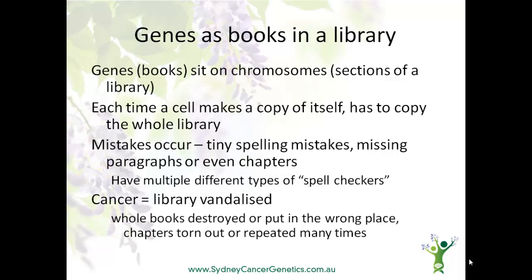And this is what cancer is — it's a vandalised library. Fortunately, we have multiple different spell-checkers and proof-readers whose job it is to look for and fix these mistakes. In some families, a spell-checker isn't working because of an inherited fault or mutation in a gene. In this case, the mistakes can build up faster, and we may see more cancer or cancers occurring at a younger age.